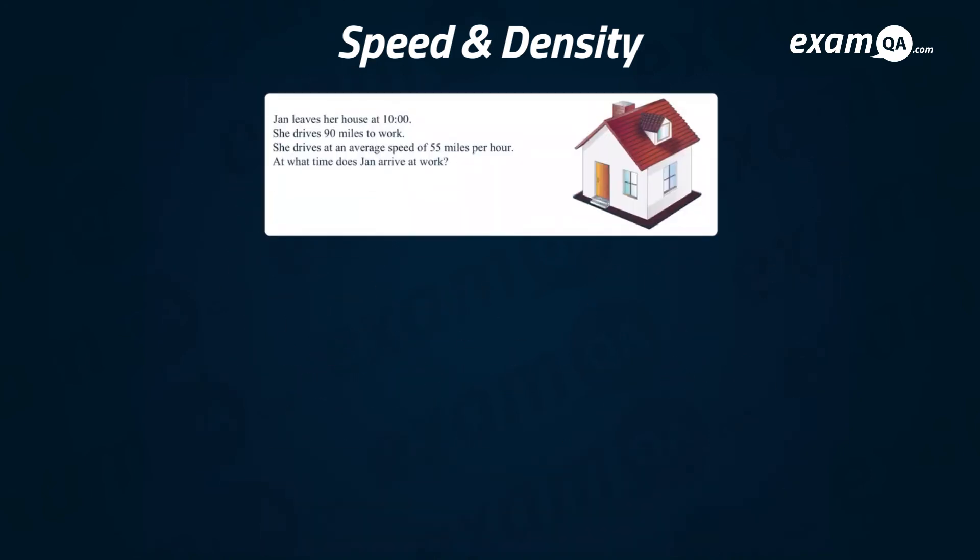Let's go to the next question. Jan leaves her house at 10 o'clock, she drives 90 miles to work and she drives an average speed of 55 miles per hour. At what time did Jan arrive at work? They're asking for the time in this question, so they must have given us speed and distance.